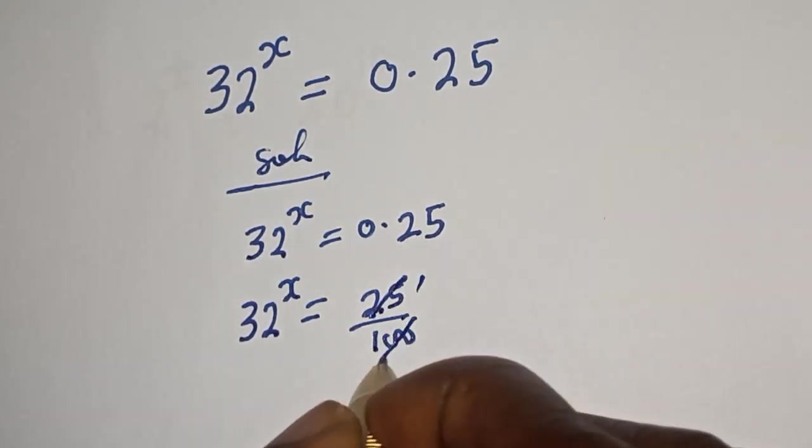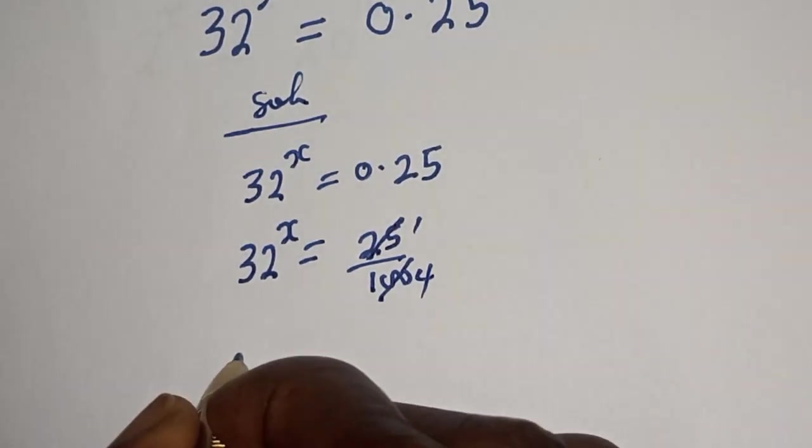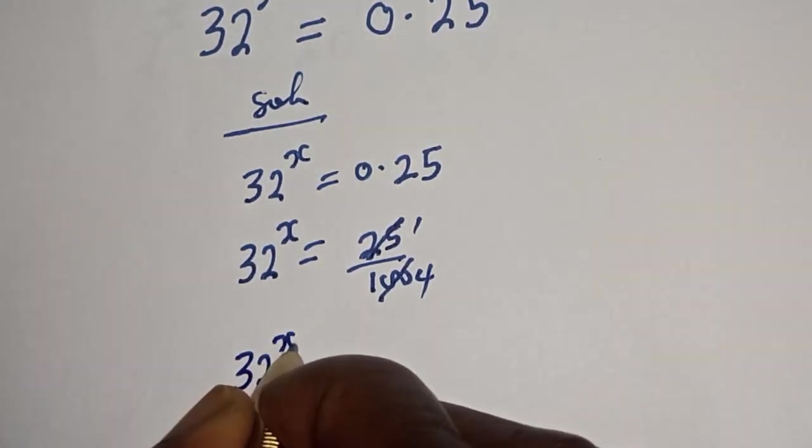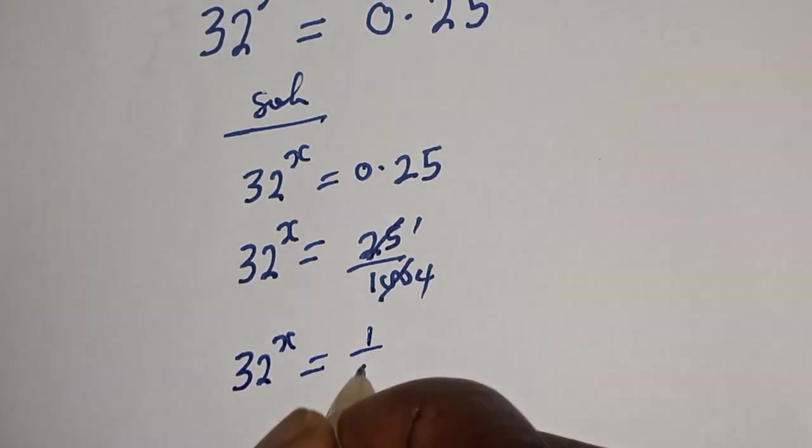25 here becomes 1, 100 here becomes 4. So 32 raised to power s equals 1 over 4.